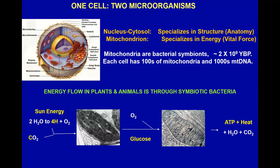Over time, many mitochondrial DNA genes were transferred into the nucleus to allow the mitochondria to specialize in making energy rather than making more of itself. Now we have a specialization: the nuclear cytosol specializes in anatomy and structure, while the mitochondria specializes in energy — the vital force. For Drosophila geneticists interested in developmental biology, all the genes they studied were chromosomal and therefore Mendelian. The activity of the fruit fly was largely ignored — they were blinded to this quantitative genetics.